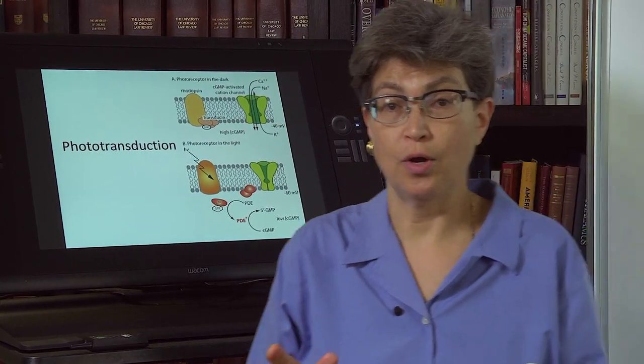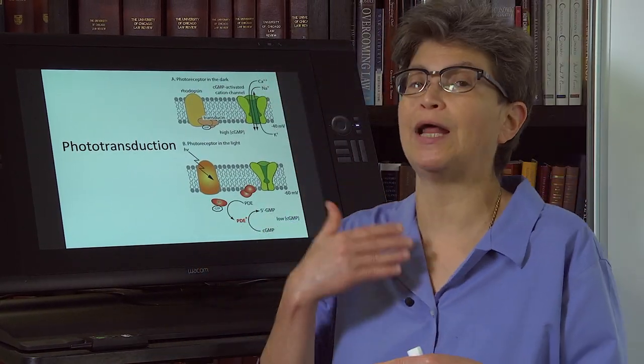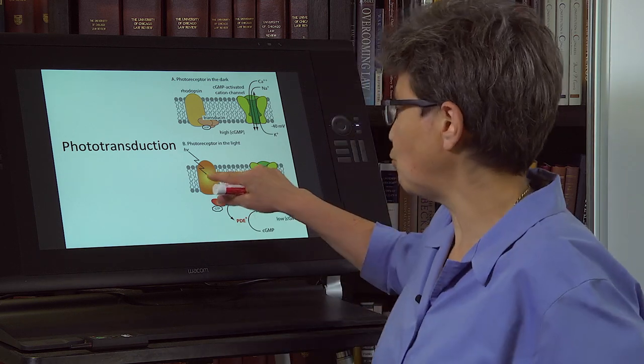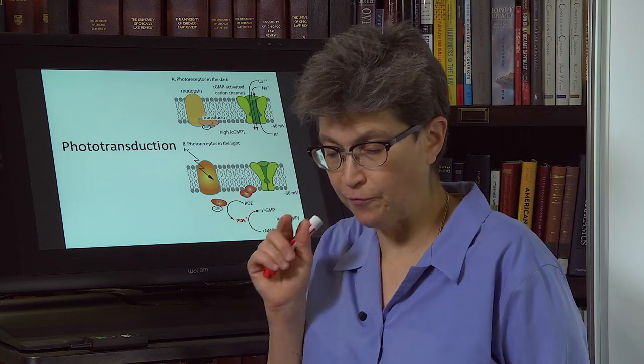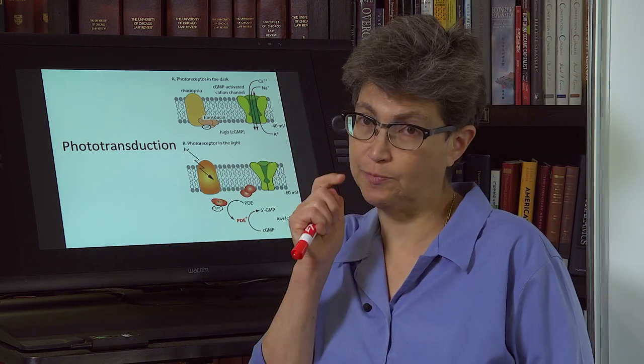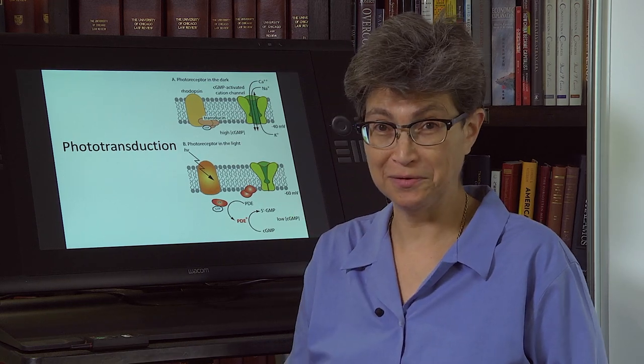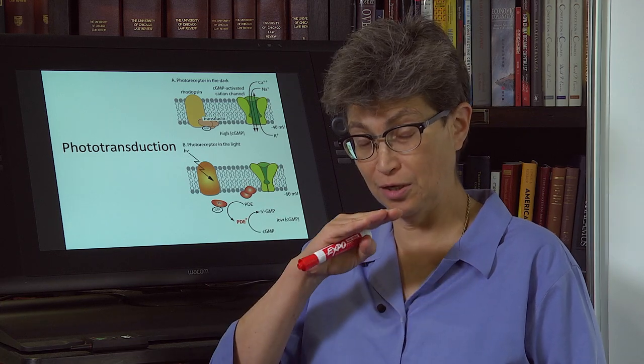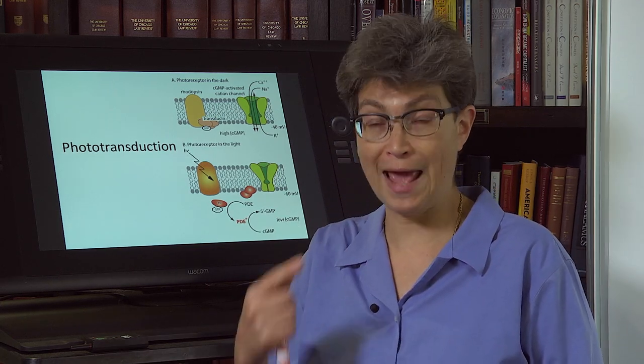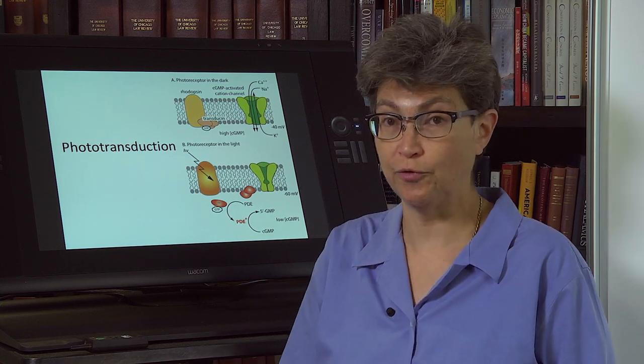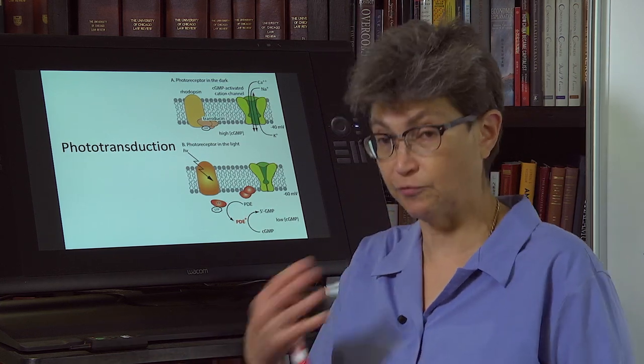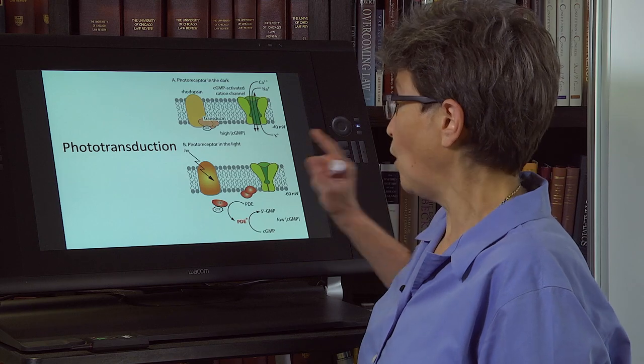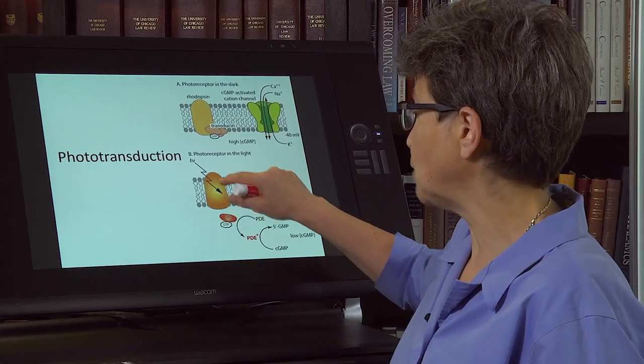How does this phototransduction work and how does it work so reliably? How is it amplified? One photon, this is not true of cones, but for rods, rods have the ability to absorb on average one photon. On average, rods will respond to one photon. It takes several photons for an average cone to respond.